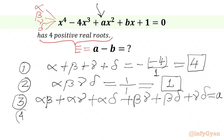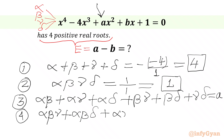The fourth equation: sum of roots taken 3 at a time — alpha·beta·gamma plus alpha·beta·delta plus alpha·gamma·delta plus beta·gamma·delta. This value equals minus of the coefficient of x, so we write minus b over the coefficient of x⁴, giving us minus b.